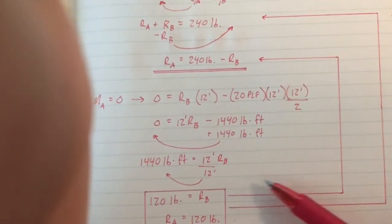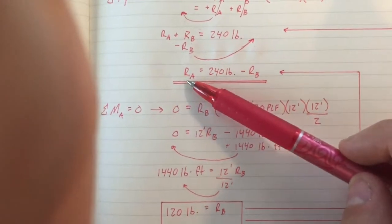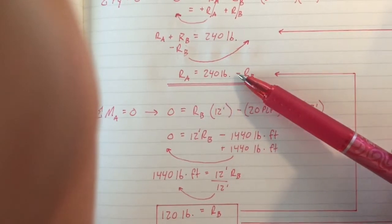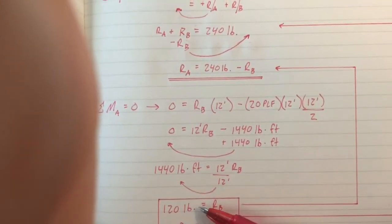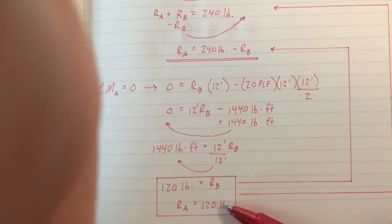By then plugging that back in to the original equation, we can now solve for RA. So 240 pounds minus 120 pounds equals RA of 120 pounds.